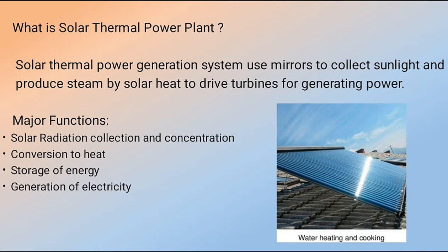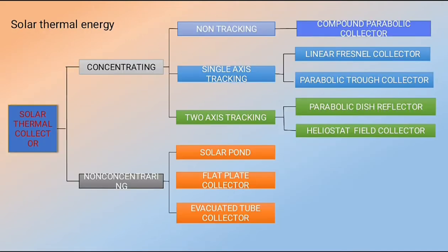There are four major functions common to all types of solar thermal plants: solar radiation collection, concentration onto a target, conversion of heat, storage of energy, and generation of electricity. Solar thermal collectors fall into two categories: concentrating solar thermal and non-concentrating solar thermal.